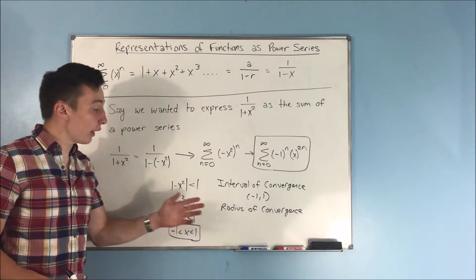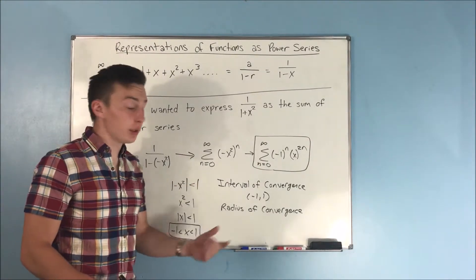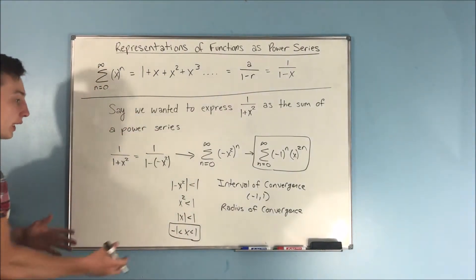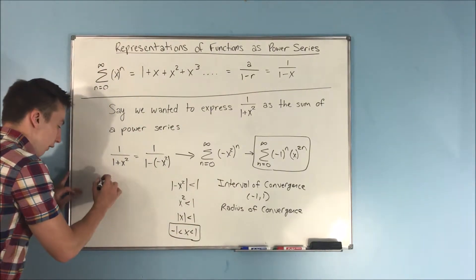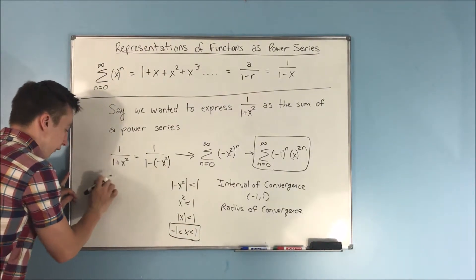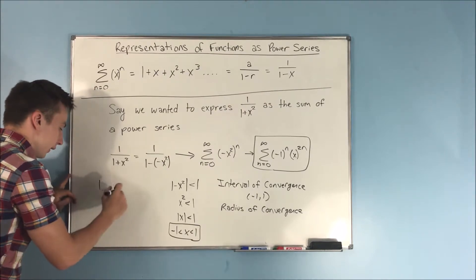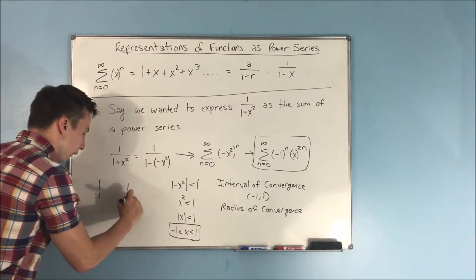And then you also have your radius of convergence. Now I've been teaching you that, well, your radius, it's kind of like the radius of your interval, right? Like if you have your interval going from, actually let's do straight lines, negative 1 to 1, well then the center of that interval is going to be 0.